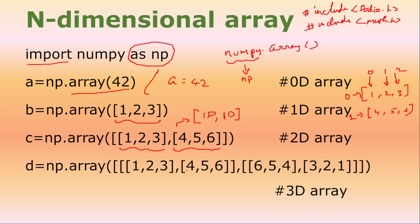Now, if I want to go for a 3-dimensional array, I am going to iteratively use this function. For 2-dimensional, we used 2 1-dimensional arrays. If I want 3-dimensional, we use 2 2-dimensional arrays — 2d, 2d. This is one 2D array, and this is another 2D array. If I put 2 2-dimensional arrays separated by a comma inside an overall bracket, that becomes a 3D array. Like this, you can create up to any dimensional array. It is quite simple and straightforward.